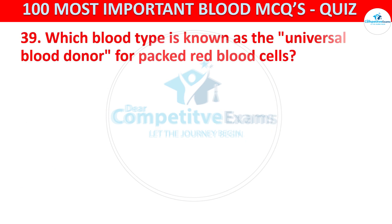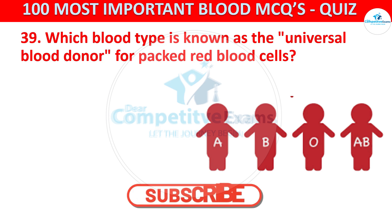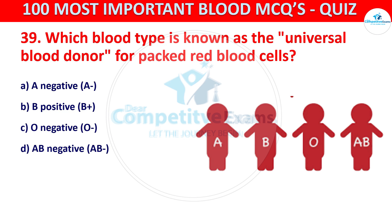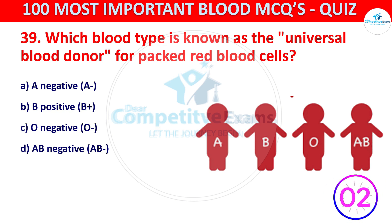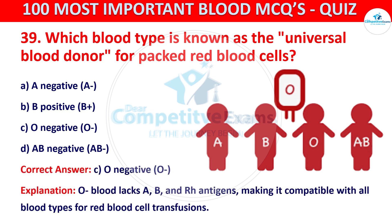Question number 39. Which blood type is known as the universal blood donor for packed red blood cells? The options are A negative, B positive, O negative, or AB negative. The correct answer is C, that is O negative. O negative blood lacks A, B, and RH antigens, making it compatible with all blood types for red blood cell transfusions.